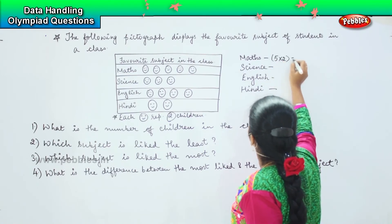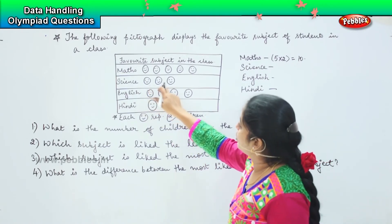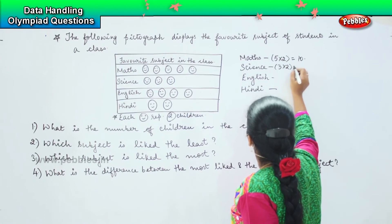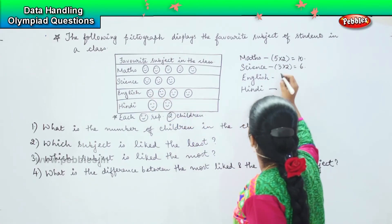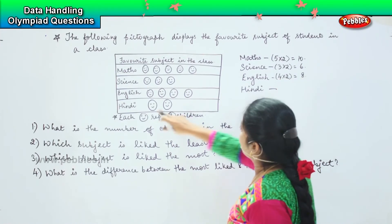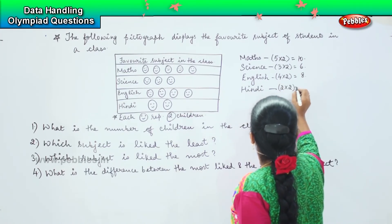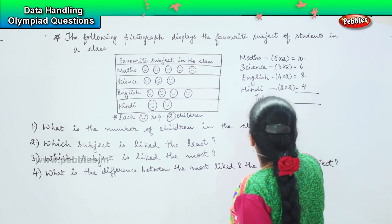Next one, two three, so three into two is six. Next one, two three four, so four into two is eight. And one two, that is two into two equals four. So now we can find the total children.